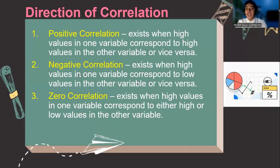Now let's talk about negative correlation. Negative correlation exists when high values in one variable corresponds to low values in the other variable or vice versa. Meaning negative correlation exists when low values in one variable corresponds to high values in the other variable. They are the opposite results.